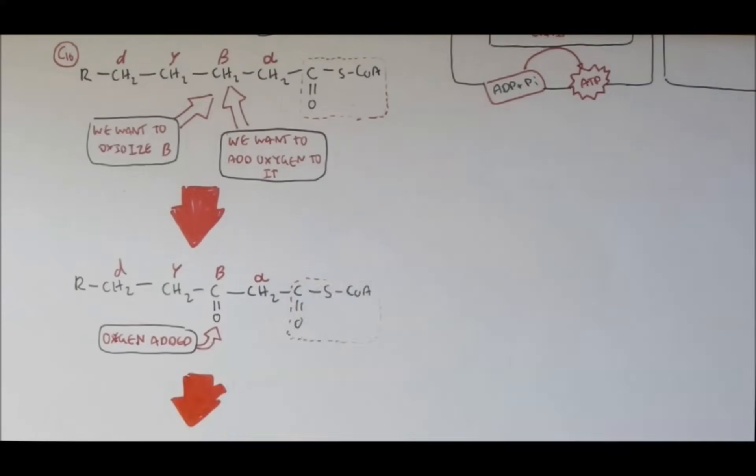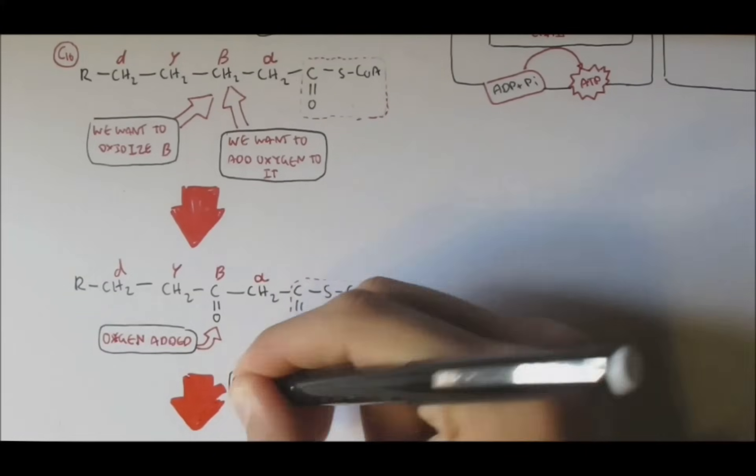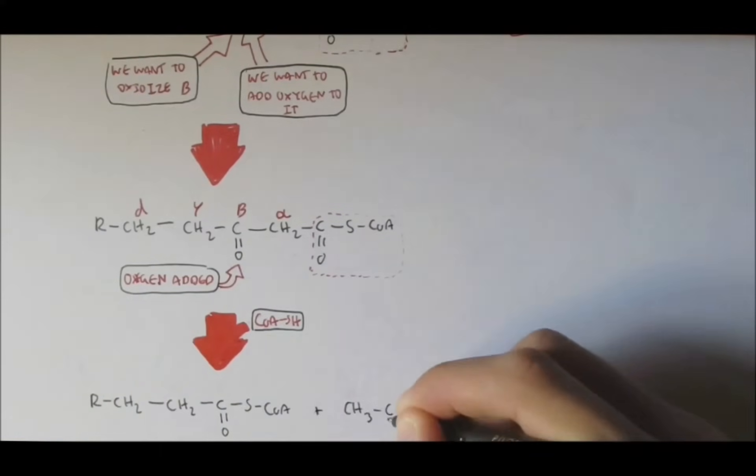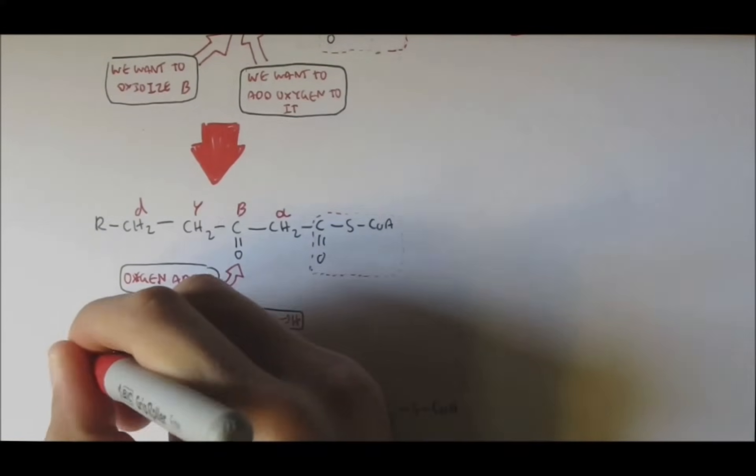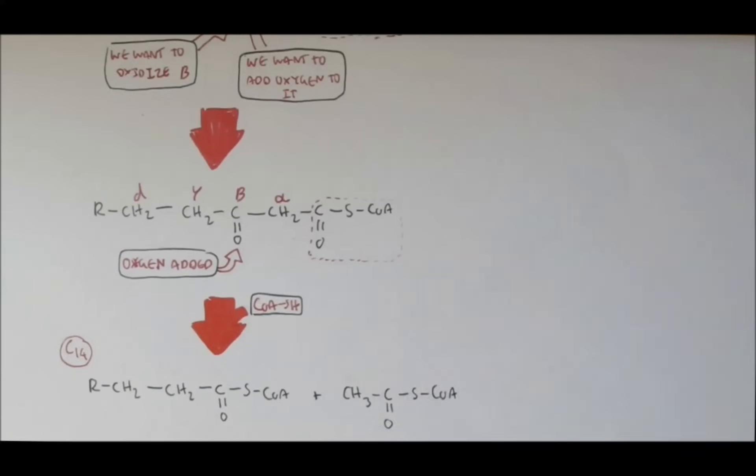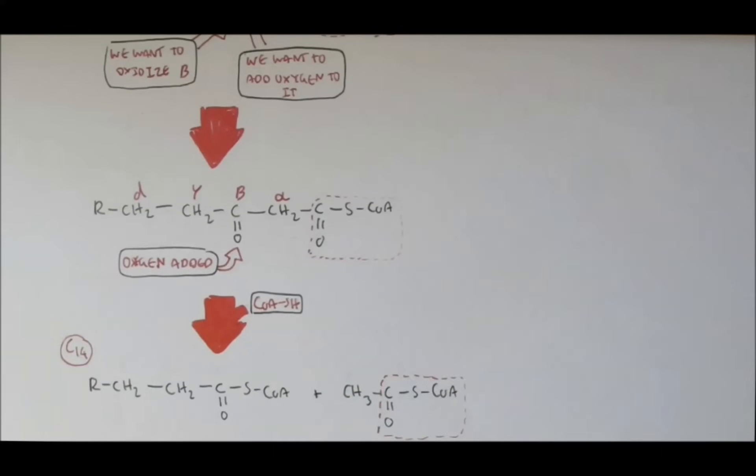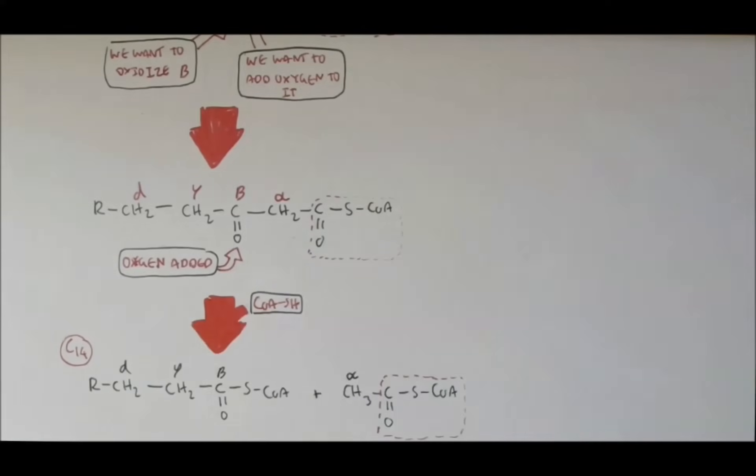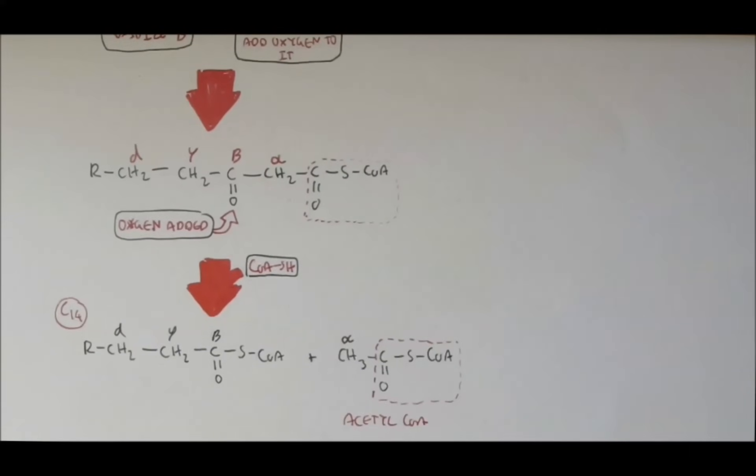So next, if we add a CoA group to the structure, we can have the beta-carbon bind to the CoA group, which will release the alpha-carbon and the carboxyl end. And this is acetyl-CoA, what's split out. But seeing we release two carbons, it means that this structure is not a 16-carbon fatty acyl-CoA anymore. It's a 14-carbon fatty acyl.